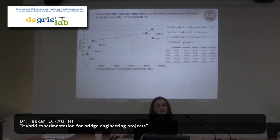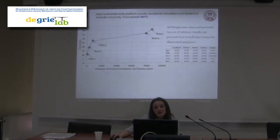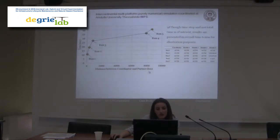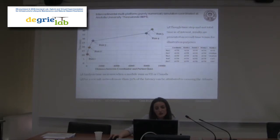We then checked whether analysis time increases as additional partners are added to the simulation. We ran five different multi-platform analyses: starting locally at Aristotle University of Thessaloniki, then adding partners from Patras, Italy, University of Toronto, and UIUC. Analysis time increases when a module runs in the United States or Canada. For a 100 Mbps network, more than 50% of latency can be attributed to crossing the Atlantic, and 7 to 10 hops and approximately 60 ms are required to reach the last European hop, while more than 70 ms are spent before connecting to the first transatlantic landing hop in Toronto.